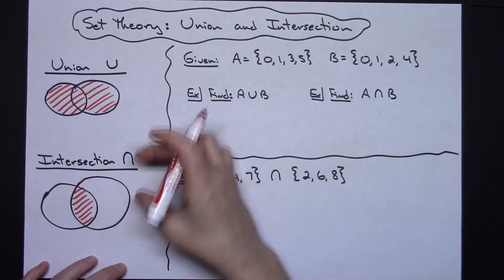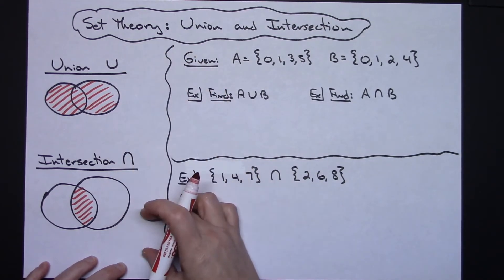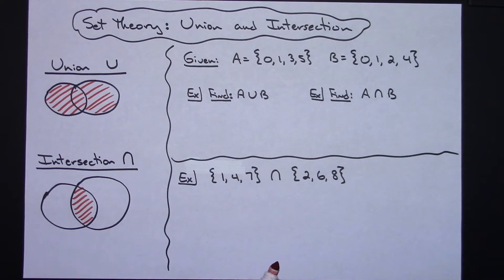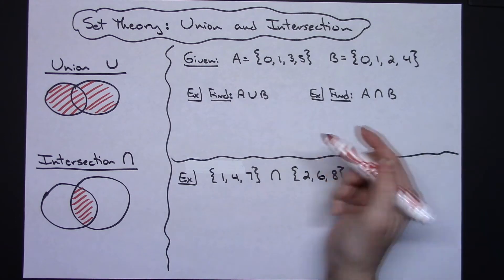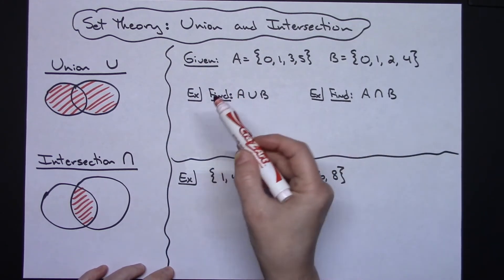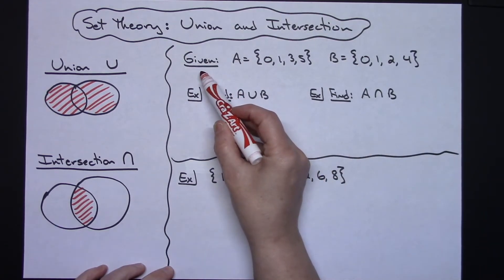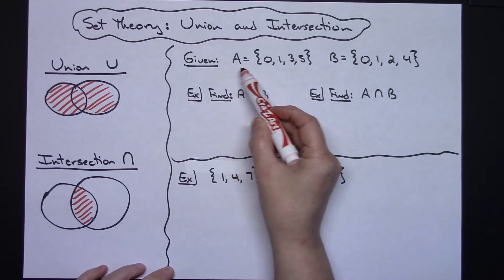So for a visual representation of what each of those mean, a Venn diagram is a really nice way to look at it. Now for the examples that we do, we're actually going to be using sets of numbers. So in these first two examples right here, we could suppose that you are given, say, set A.